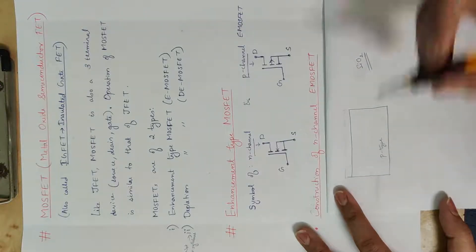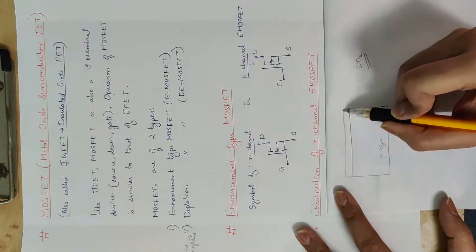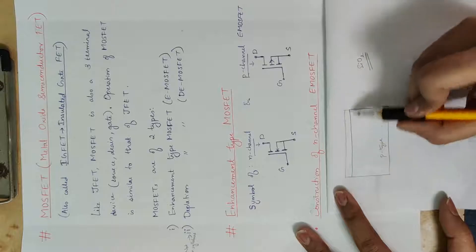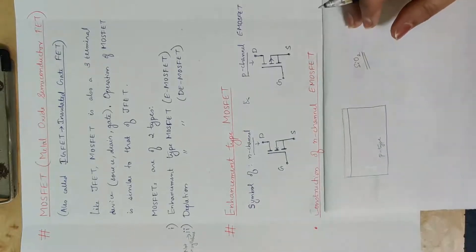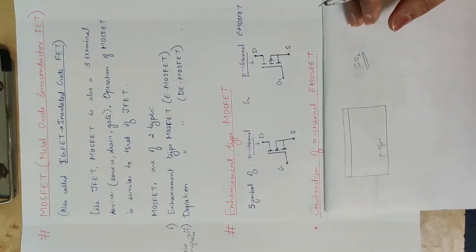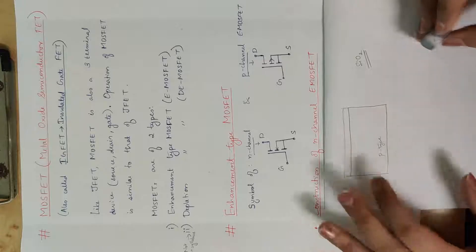We have a thin layer in this MOSFET. When we have this thin layer, two holes are cut into it.